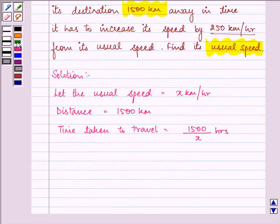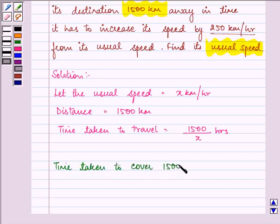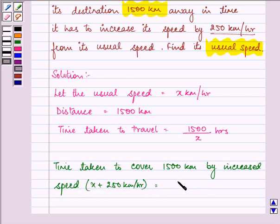Now time taken to cover 1500 km by increased speed, that is x plus 250 km per hour, will be equal to 1500 upon x plus 250 hours.